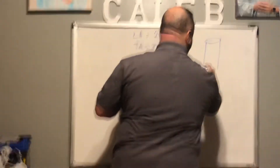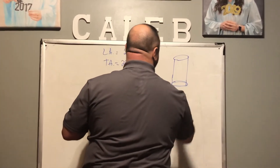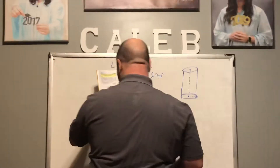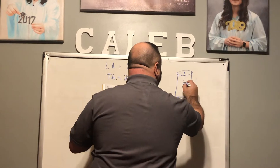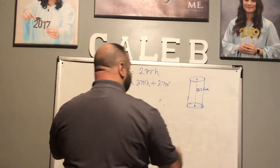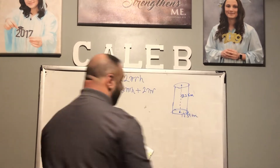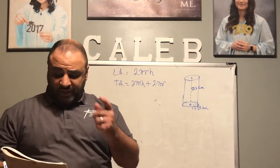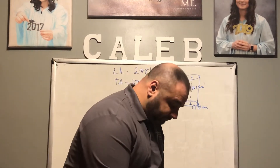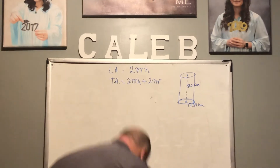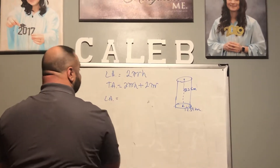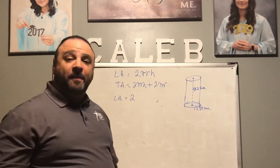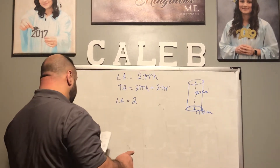So let me draw our cylinder. We have a cylinder with an altitude of 53.2 kilometers and a radius of 17.39 kilometers. What is the lateral area and what is the total area? Let's get our formulas and plug in the numbers. Make sure you get your calculators out. The lateral area equals 2π times the radius. For pi, we're going to use the numerical value of 3.14, or you can use the pi button on your calculator.